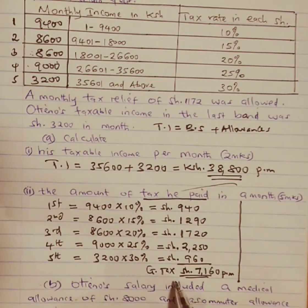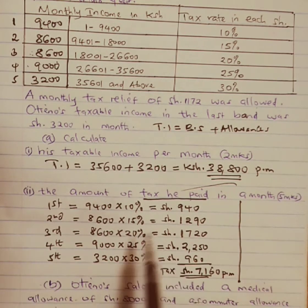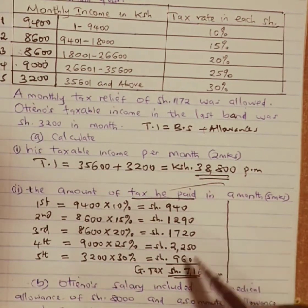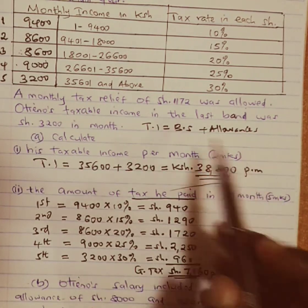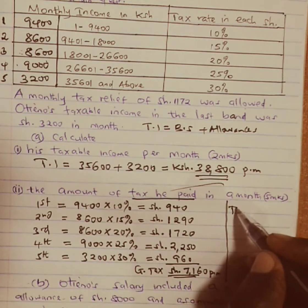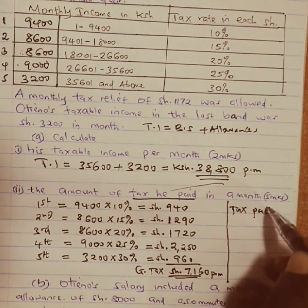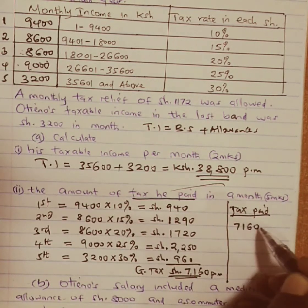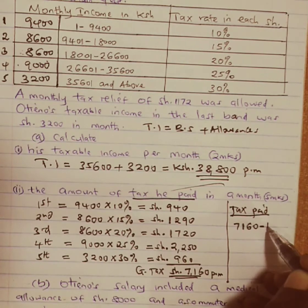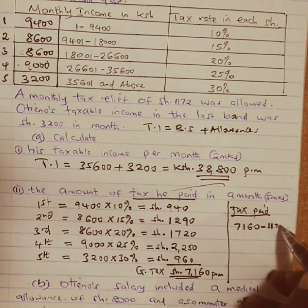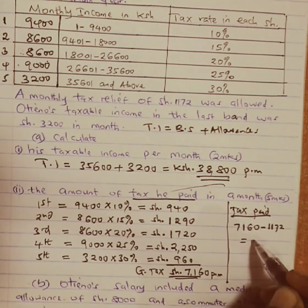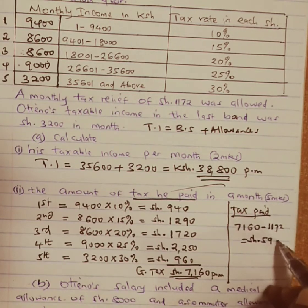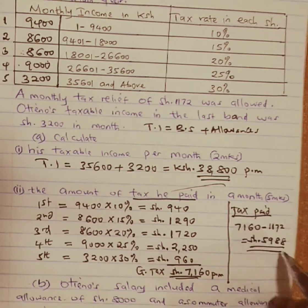This is the total amount of tax calculatable from the table. But individuals do not pay gross tax — they pay the net tax because of the relief. Therefore, to get the actual tax paid, you take the gross tax of 7,160 minus the relief of 1,172, which gives us an amount equal to 5,988 shillings per month.